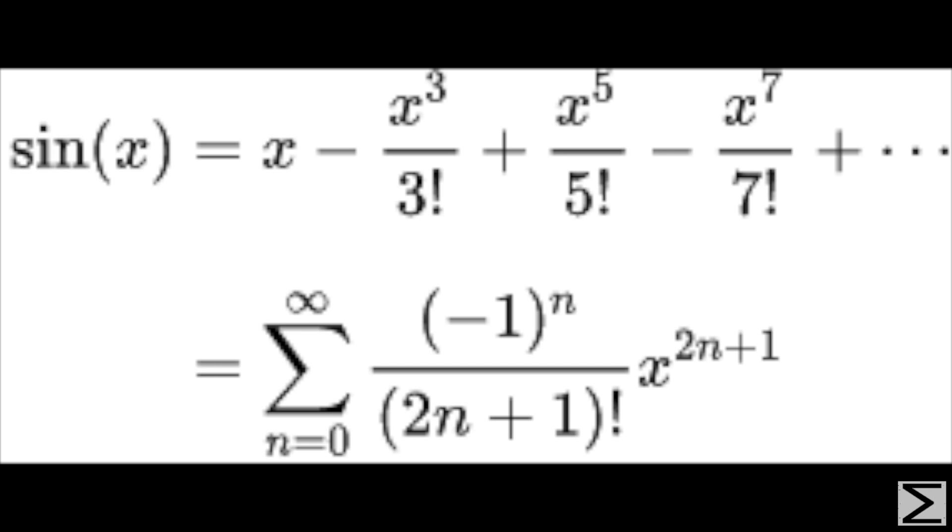This can be simplified as the infinite sum of x to the 2k plus 1 divided by 2k plus 1 factorial for k equal to all integers greater than or equal to zero.